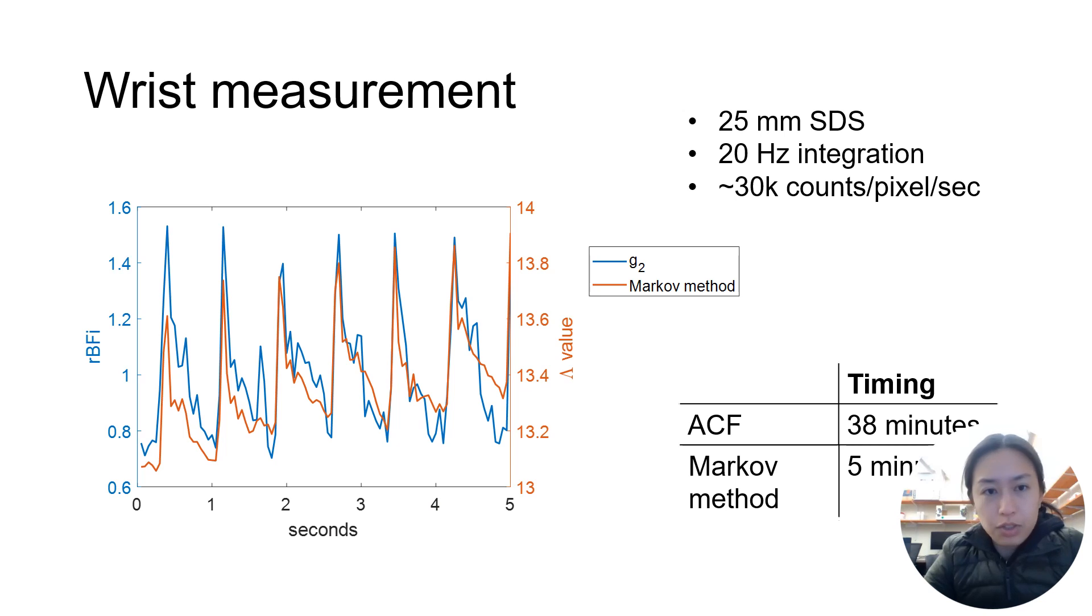Recovering BFI from the autocorrelation calculations took approximately 38 minutes, whereas we were able to recover essentially the same time trace with our Markovian method, but with almost a factor of 8 reduction in computation time. We have yet to fully optimize the calculation times, and so we anticipate an even further reduction in computation time in the future.